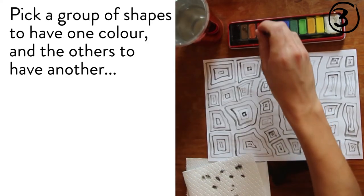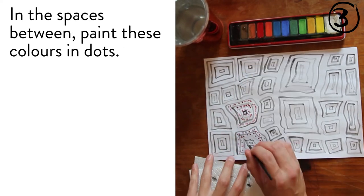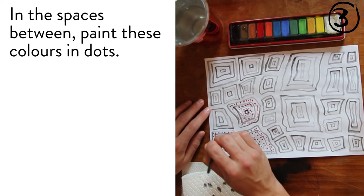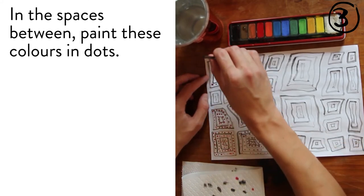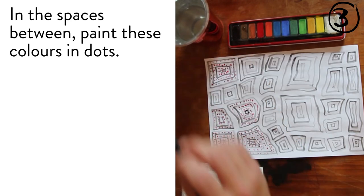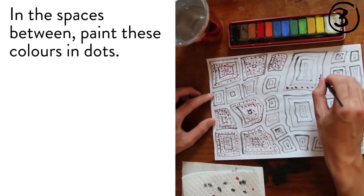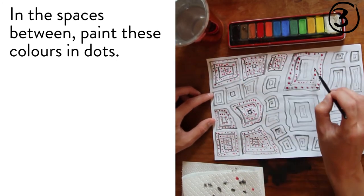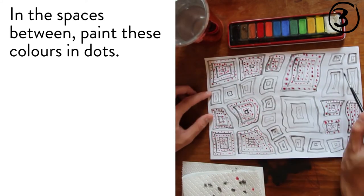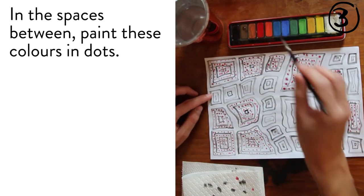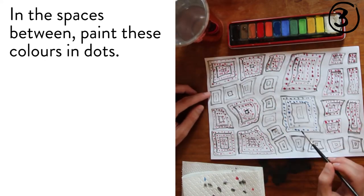Pick a group of shapes to have one color and the others to have another. In the spaces between, paint these colors in dots.